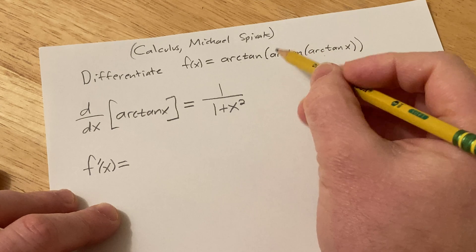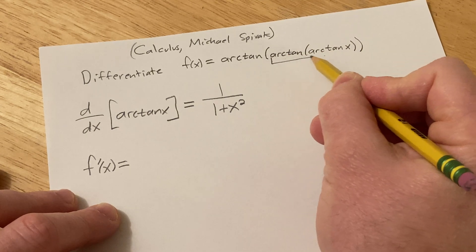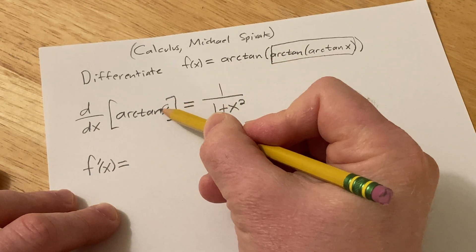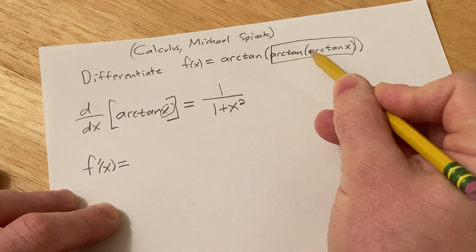So we're going to have to use the chain rule. This is going to be our inside function. So for a moment here, you want to think of this as your x, just all of this here.